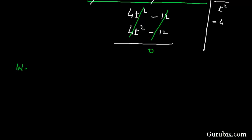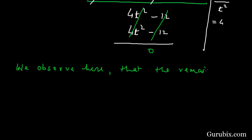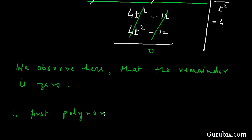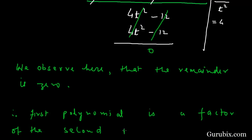We observe here that the remainder is 0. Therefore, the first polynomial t squared minus 3 is a factor of the second polynomial. This is the solution of the question. Thank you.